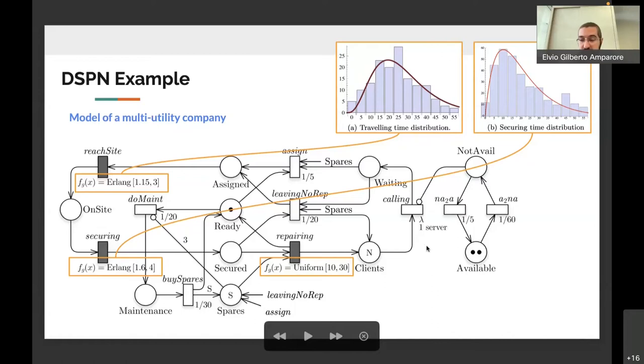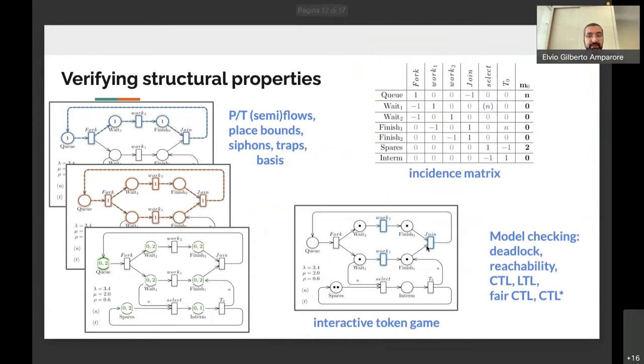The second step in the workflow is verifying the structural properties, and this is done in several different ways. In particular, one can obtain the P/T invariants, semiflows or P/T flows, the place bounds, the siphons and traps, or the basis of the models in order to verify the invariant properties. One can play the interactive token game of the model to have an intuition on how the model works, and one can visualize the incidence matrix or other structural information of the model. And then there are also the possibility of doing model checking for deadlock analysis, reachability, or expressing formulas in four different logics: CTL, LTL, Fair CTL, and CTL star.